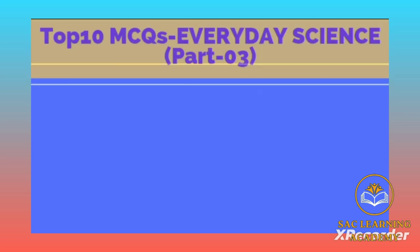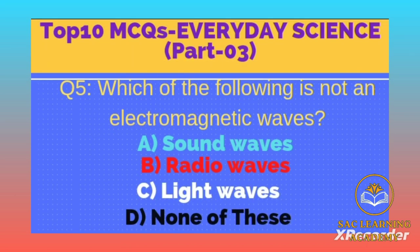Question number 5: Which of the following is not an electromagnetic wave? Option A: sound waves, B: radio waves, C: light waves, D: none of these. Correct option is A, sound waves.